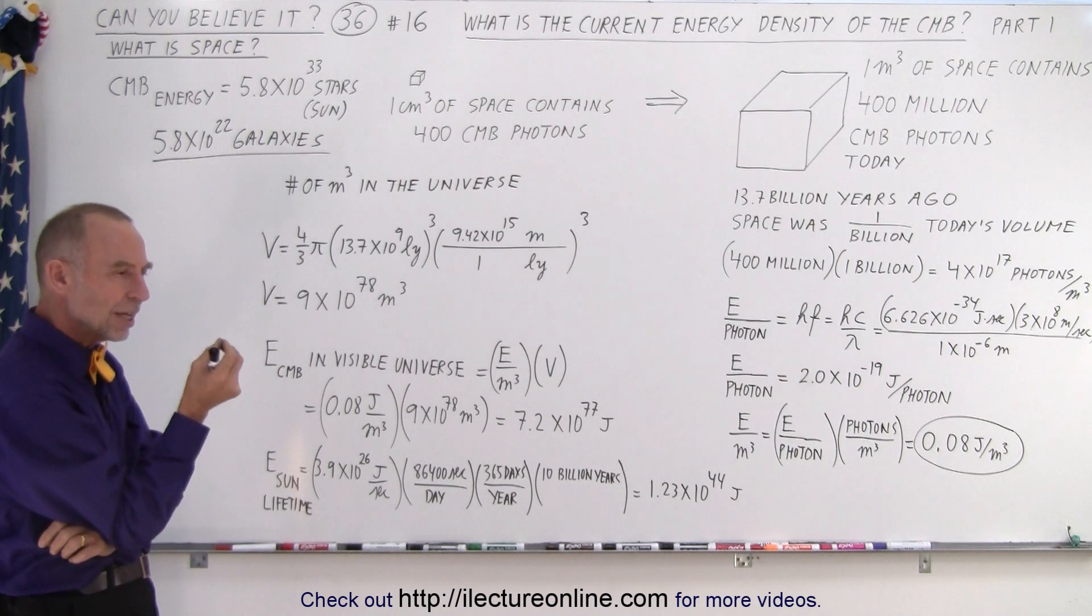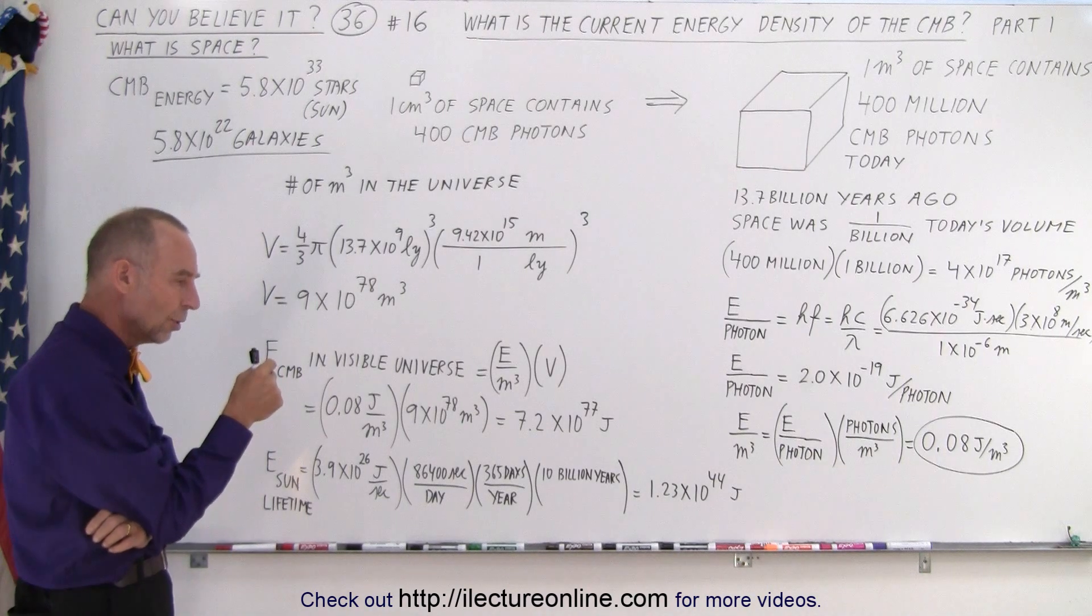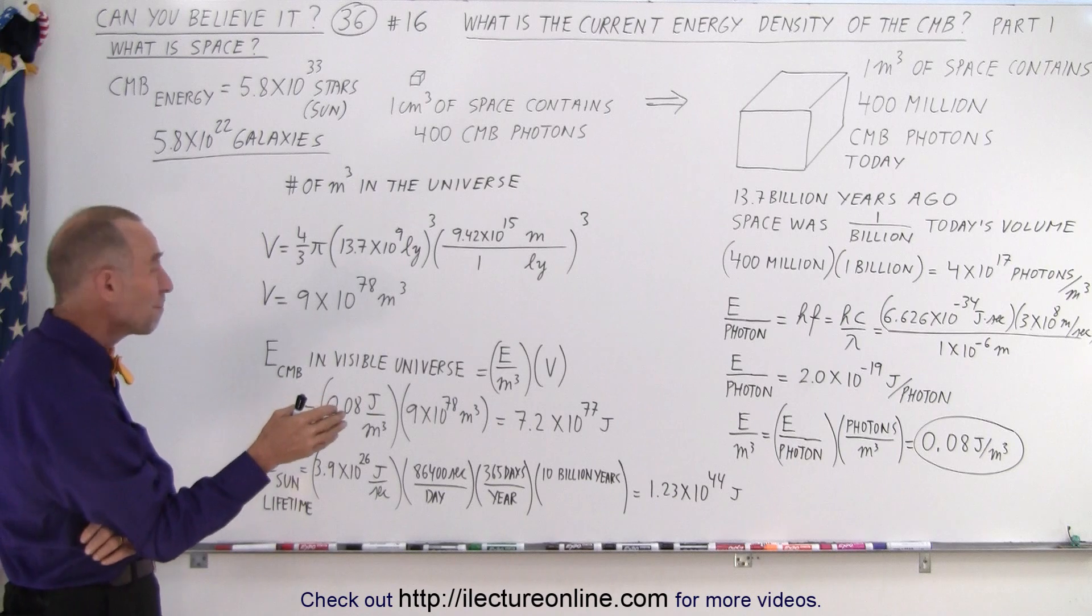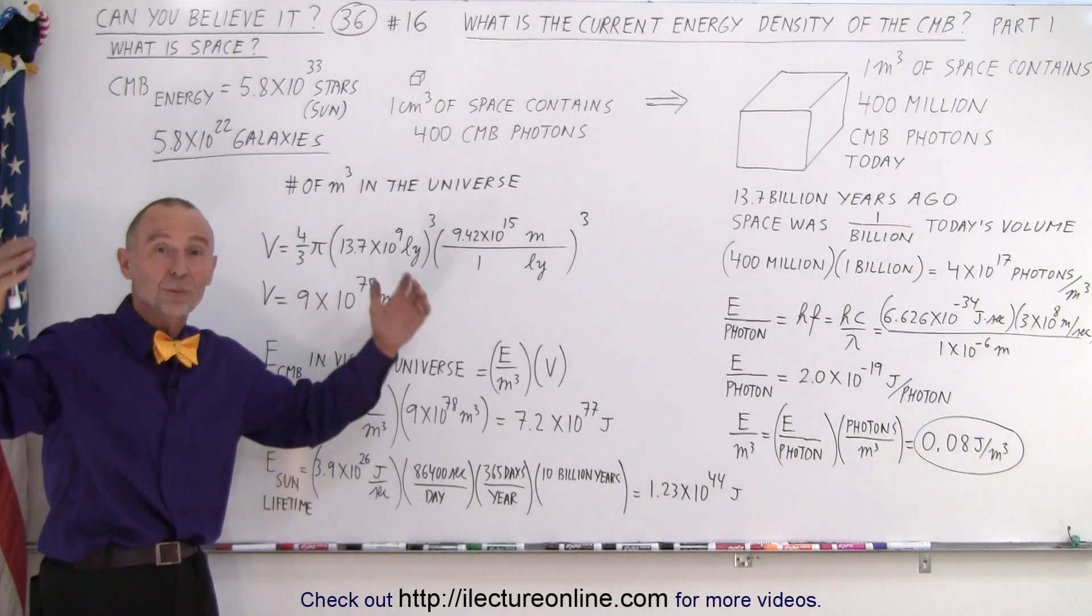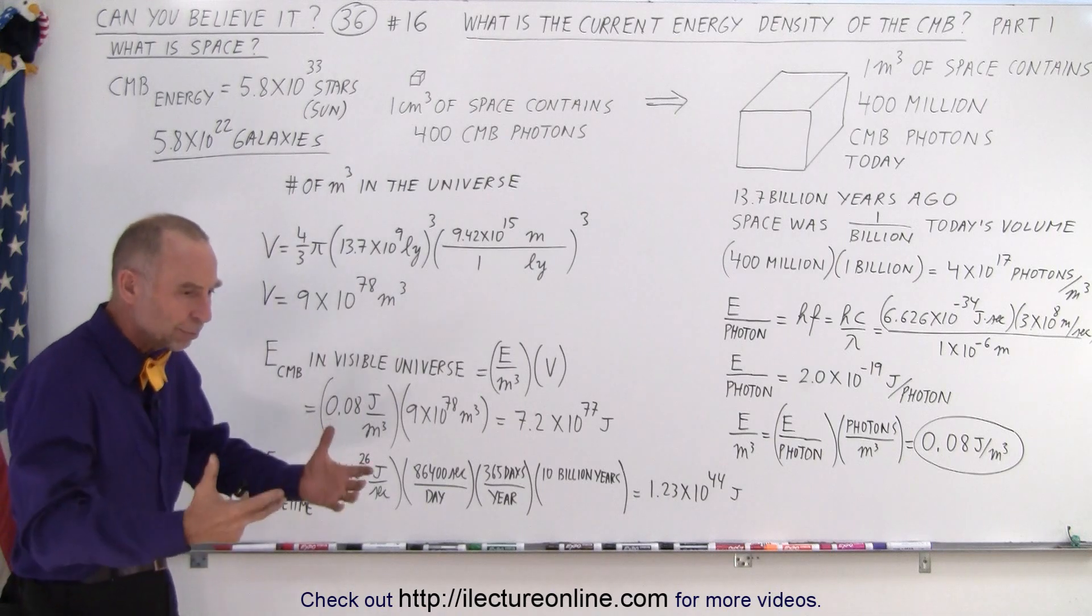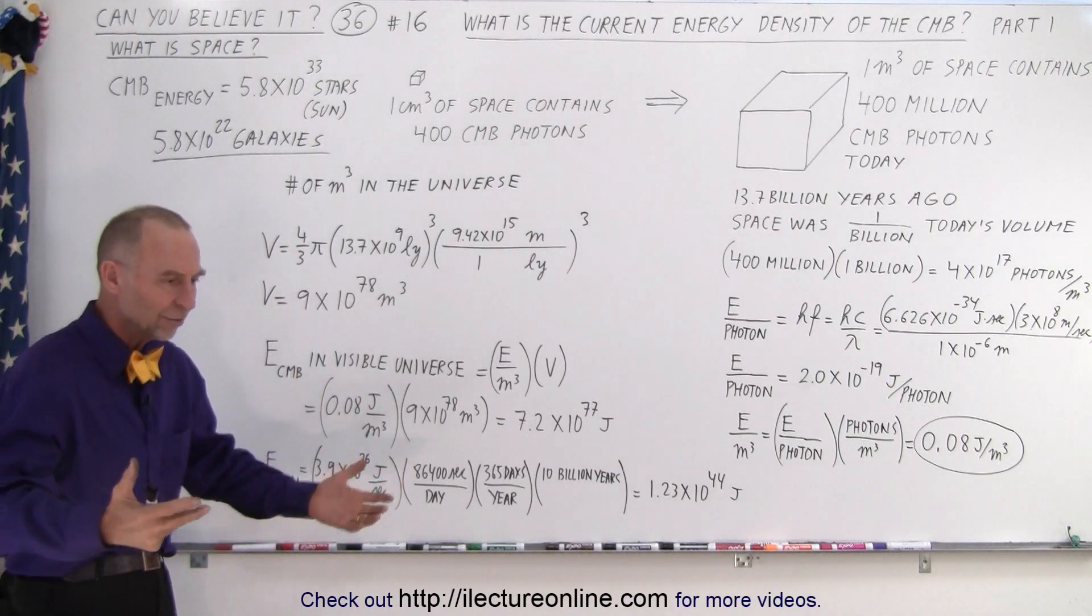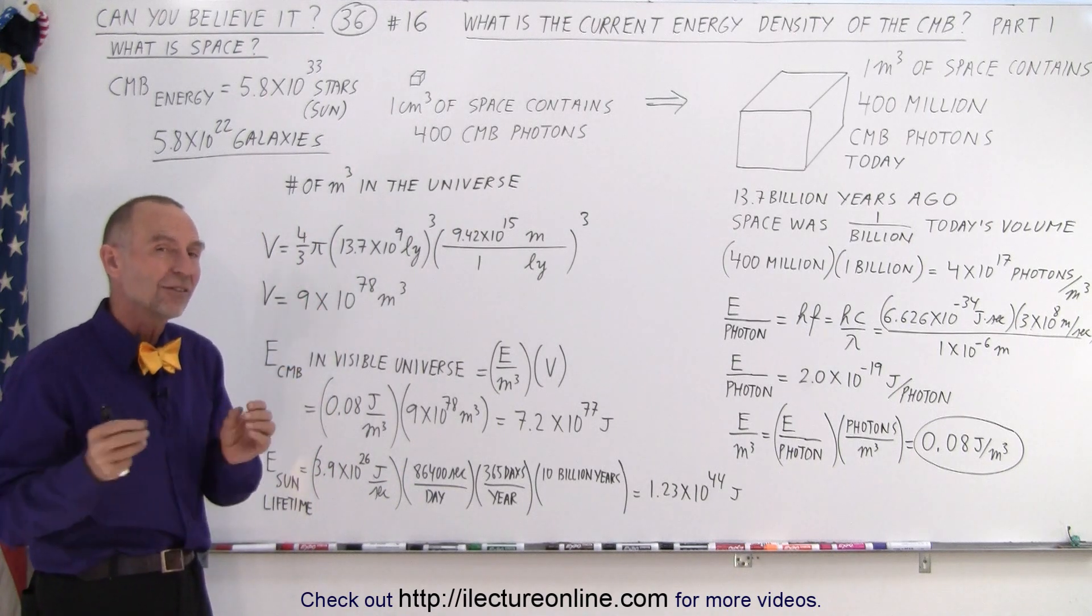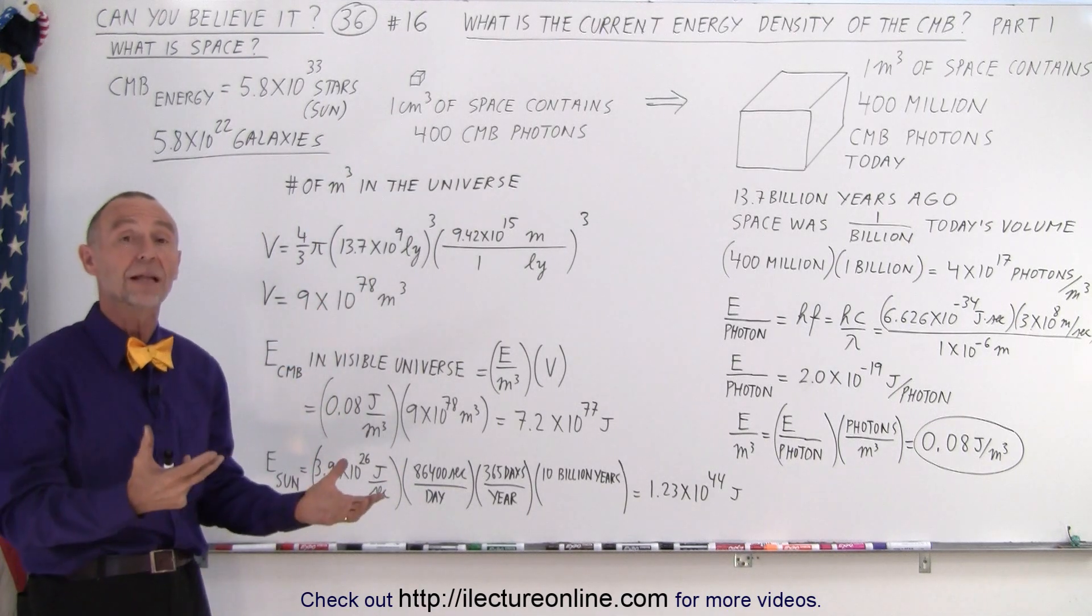The amount of energy in the CMB radiation 13.7 billion years ago was the equivalent of a billion times as many galaxies as we currently have in our visible universe. The energy output of all the stars and all the galaxies multiplied times a billion. There was an enormous amount of energy in the CMB radiation. Now what happened to that energy?